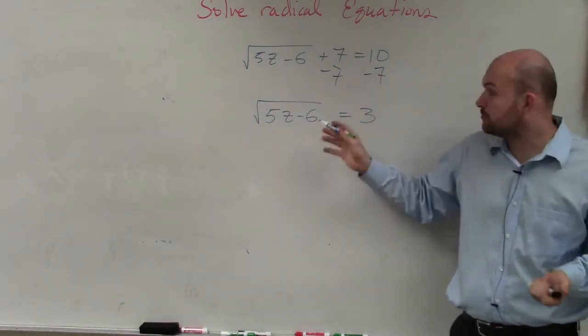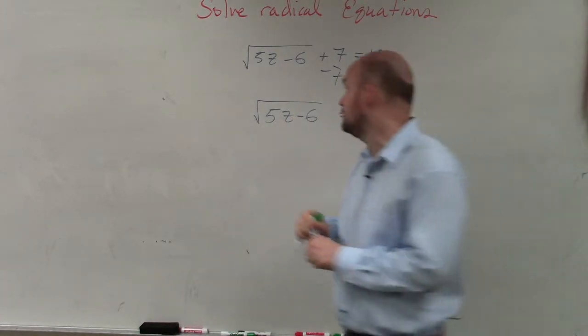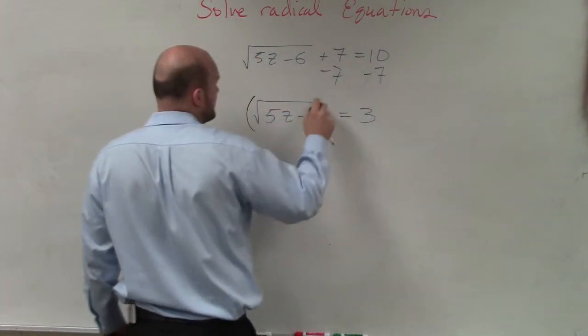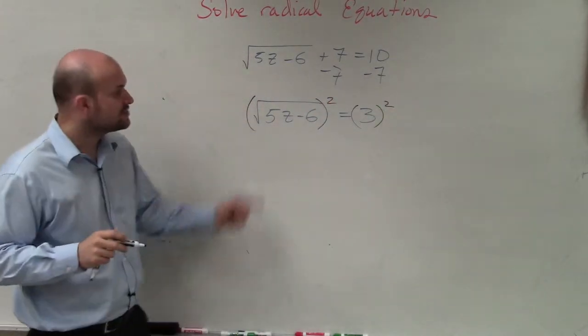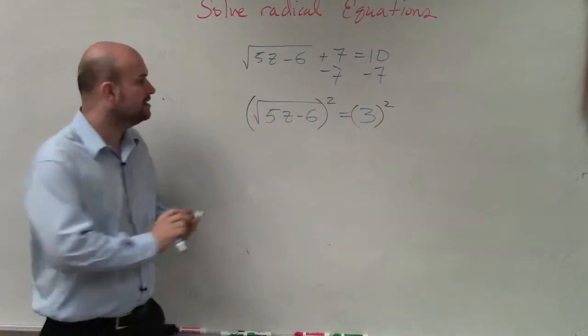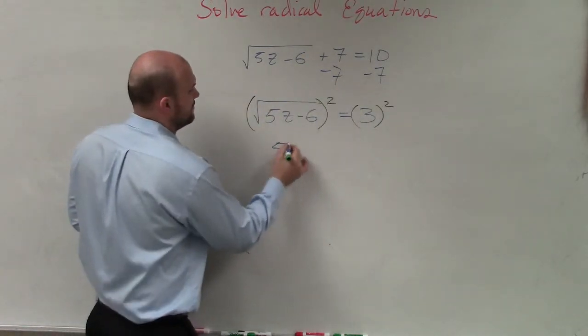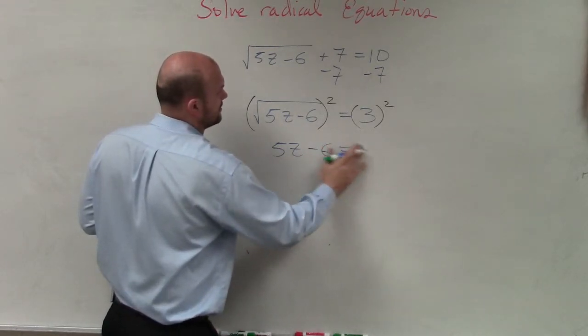All this is under the square root, so I got to undo the square root. So I'm going to have to square both sides. So now the squaring and the square root undo each other. So I'm just left with 5z minus 6 equals 9.